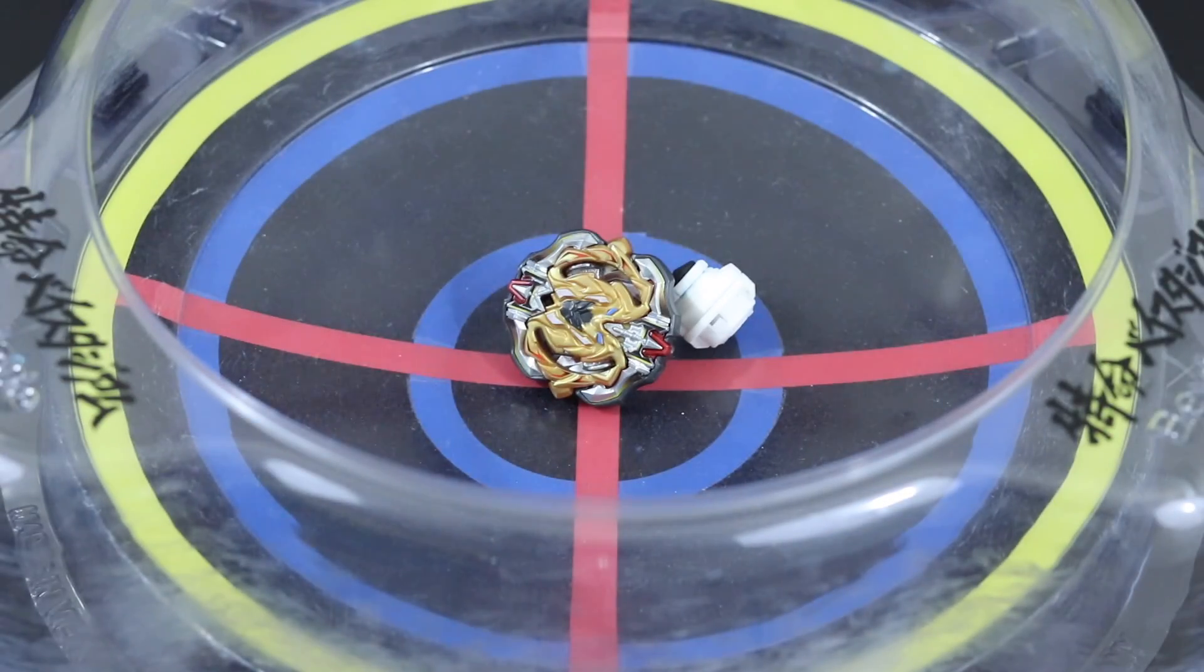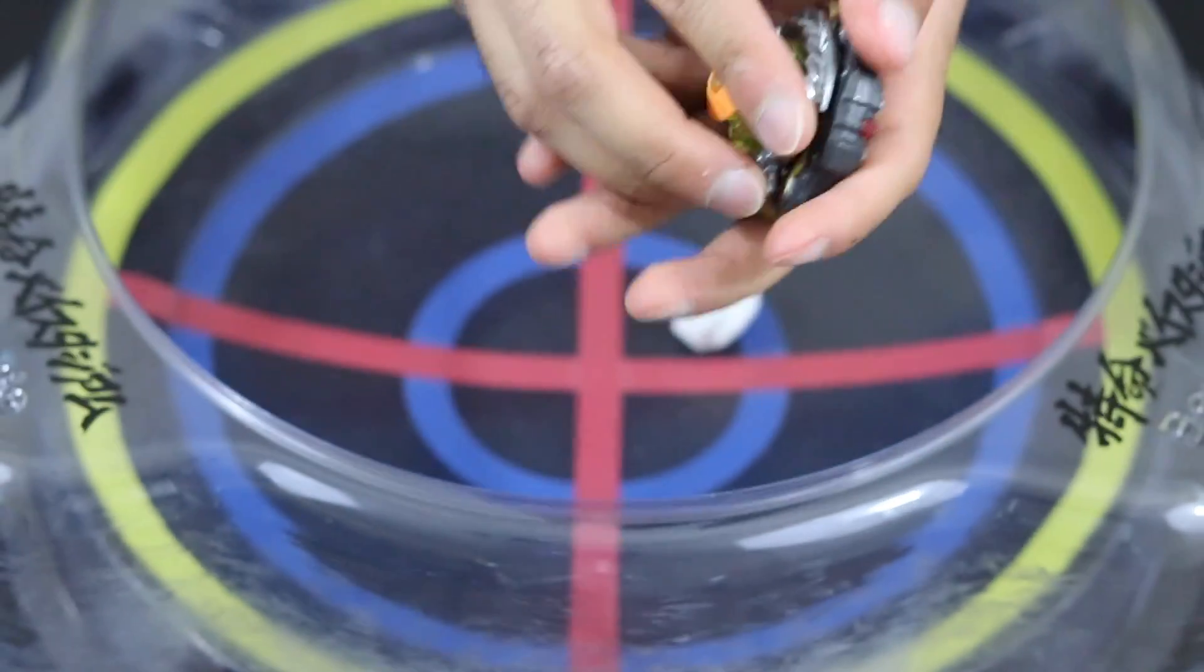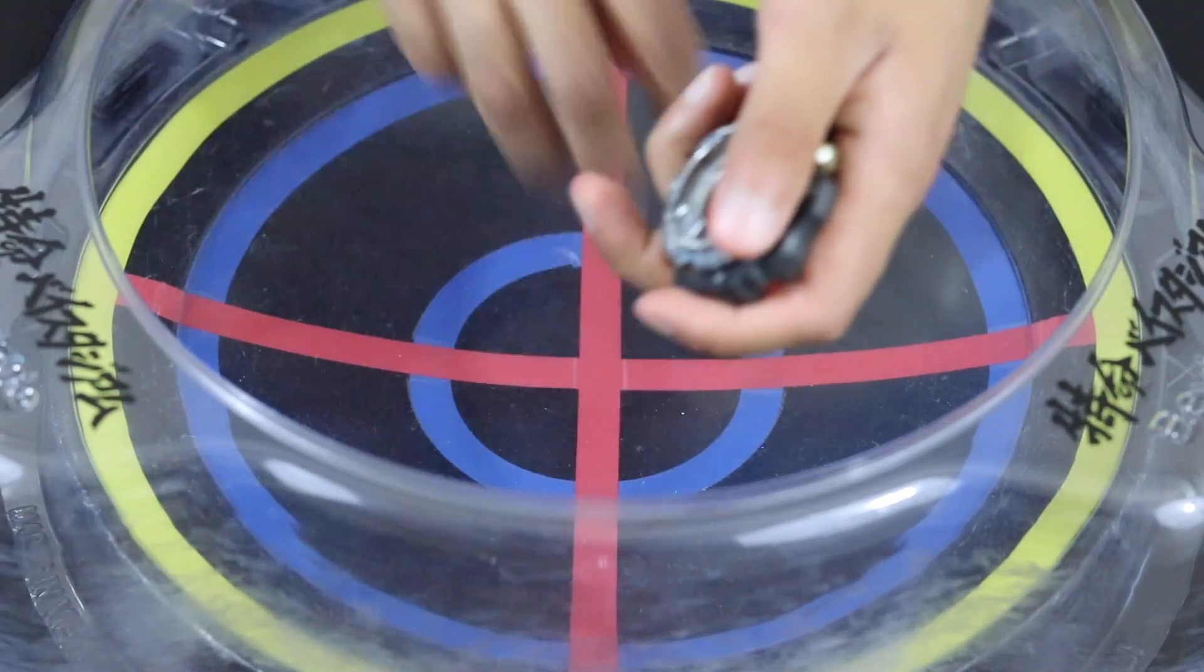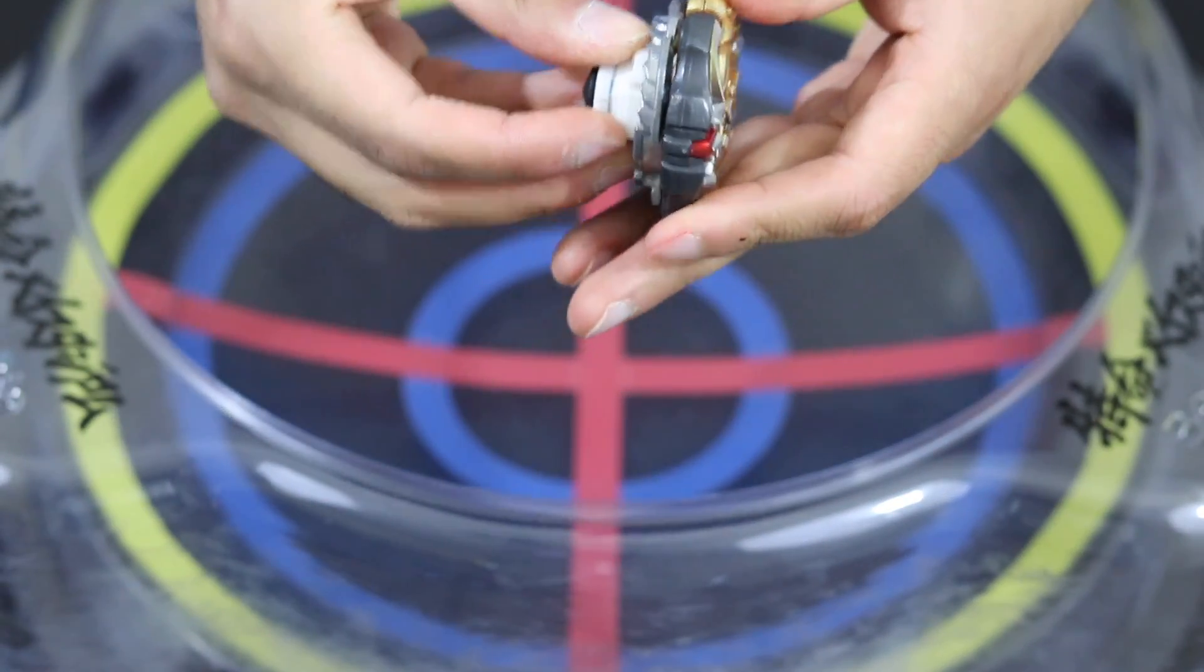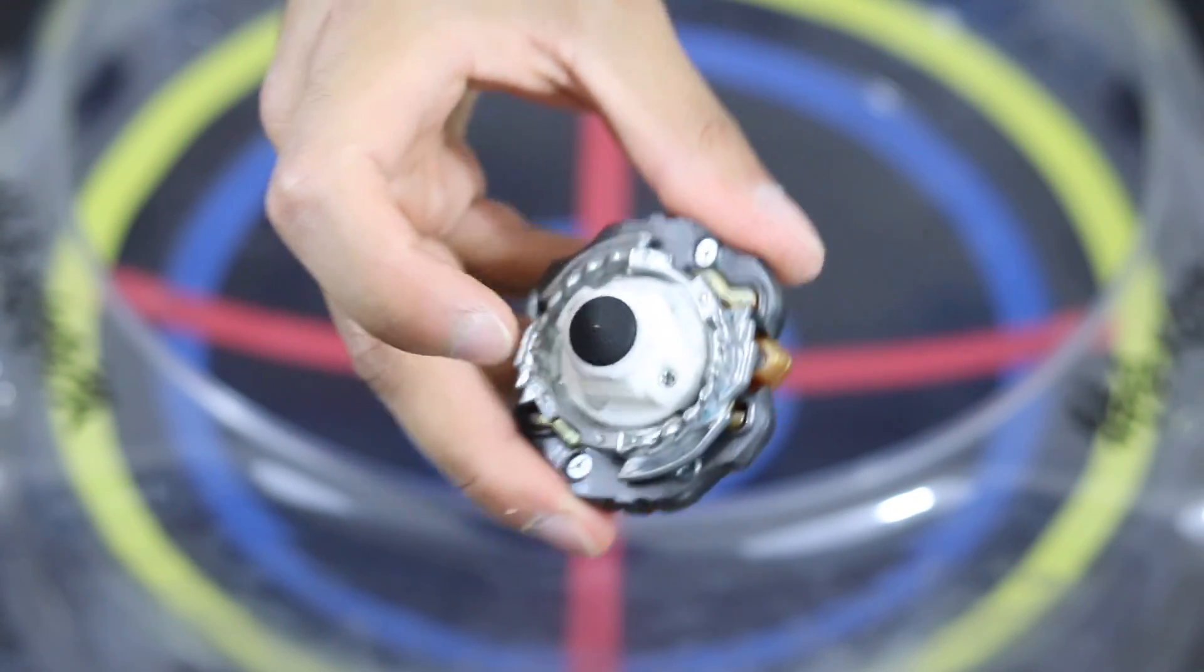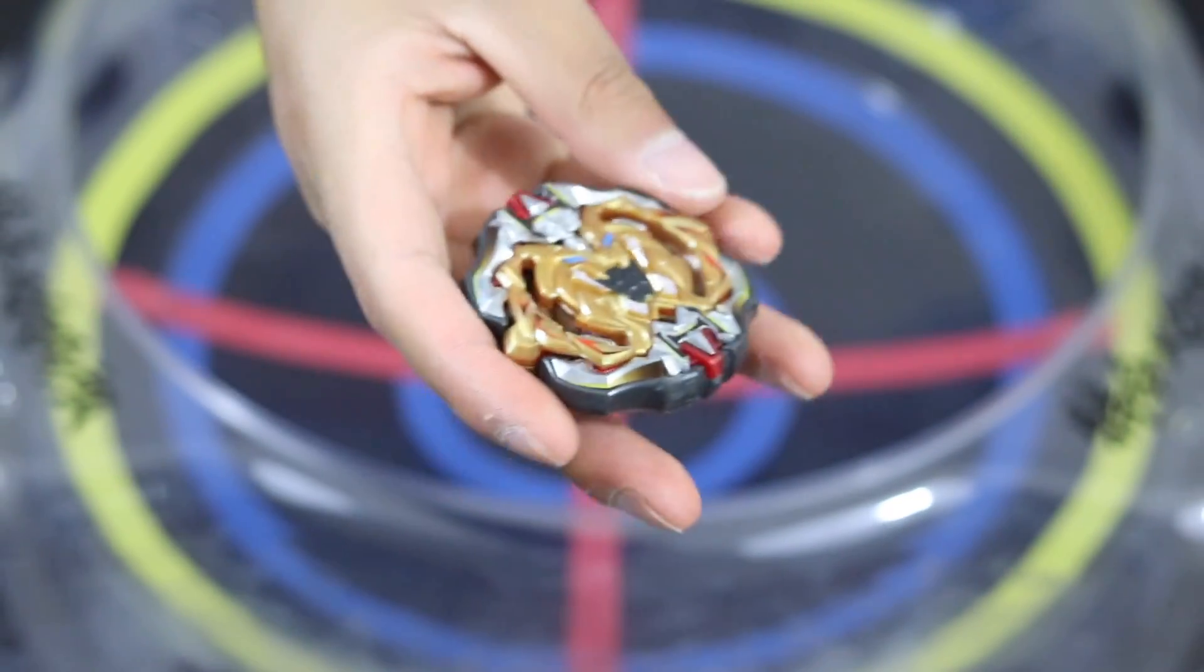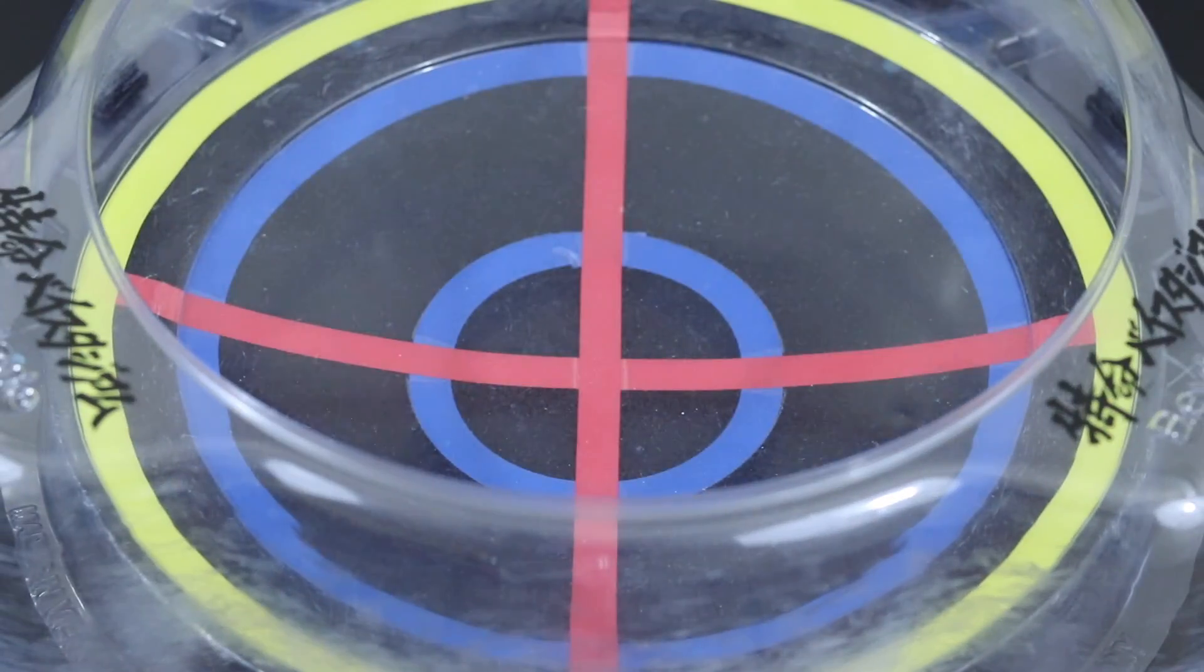For this test I'm going to be using Archer Hercules with the driver. We're going to get rid of Eternal and swap it out with Kernel. I use this Beyblade because it has a lot of good balance and stamina, and I think it'd be a perfect fit for this driver. Let's do a test launch.